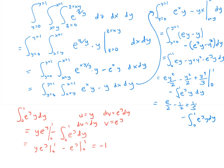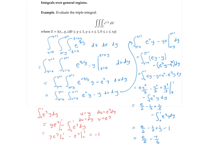So putting this all together, I get e over two minus a half plus a third minus one, which is e over two minus seven sixths. This completes the computation of this triple integral.